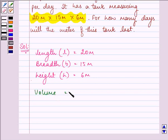Since this is a cuboidal tank, we can find out the volume of this tank by multiplying length with breadth with height. That is 20 into 15 into 6, which equals 1800 meter cube.